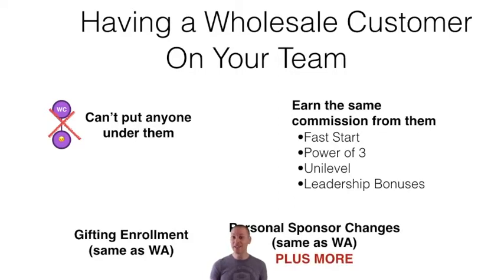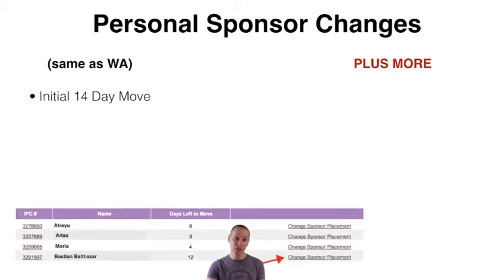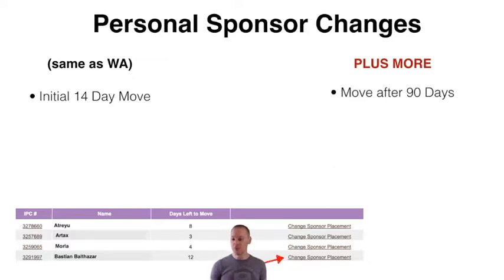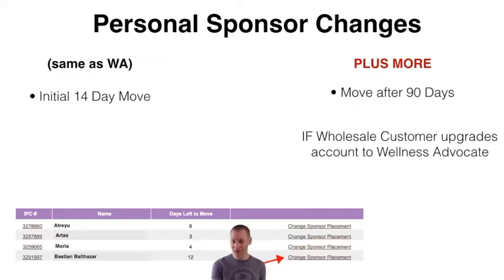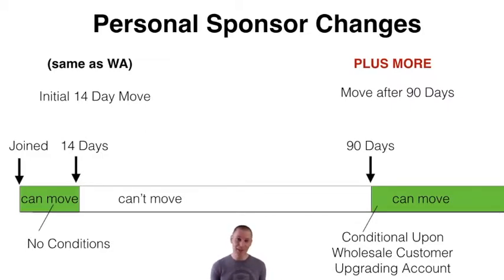Personal sponsor changes are exactly the same as a wellness advocate, except there's one more option — it's called a 90-day move. In addition to being able to move them anywhere during the first 14 days, by logging into your team tab on your back office and selecting sponsorship changes, you also have the option to move them after 90 days. The wholesale customer has to make that upgrade after 90 days. If they upgrade between 14 days and 90 days, you can't move them even after the 90 days. This provides a lot of stability and people aren't able to undermine the system with this.